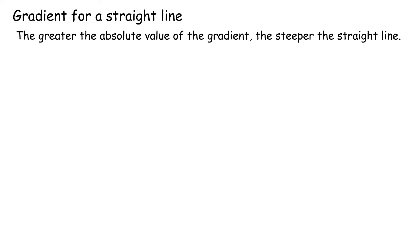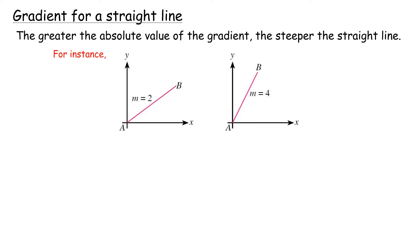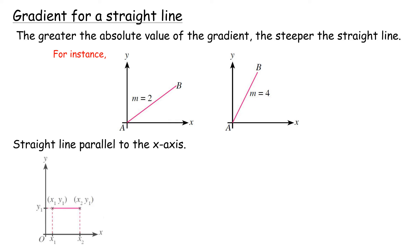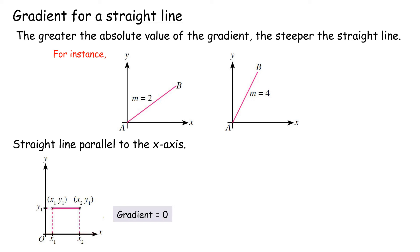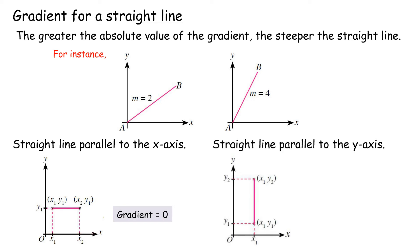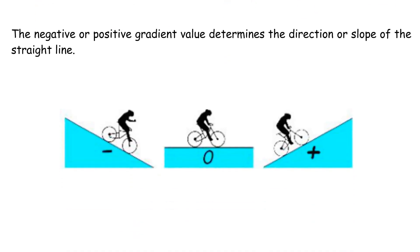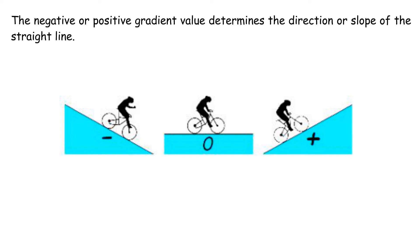Gradient for a straight line: The greater the absolute value of the gradient, the steeper the straight line. For instance, gradient 4 is steeper than gradient 2. For a straight line parallel to the x-axis, gradient equals 0. For a straight line parallel to the y-axis, gradient is undefined. The negative or positive gradient value determines the direction or slope of the straight line — going down, gradient is negative; going up, gradient is positive.